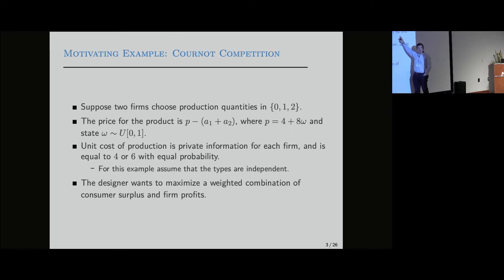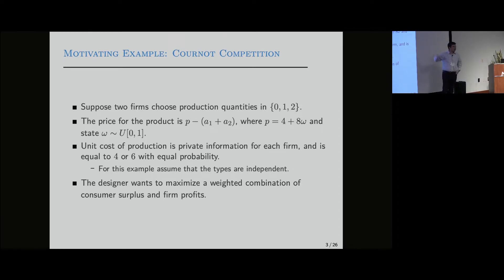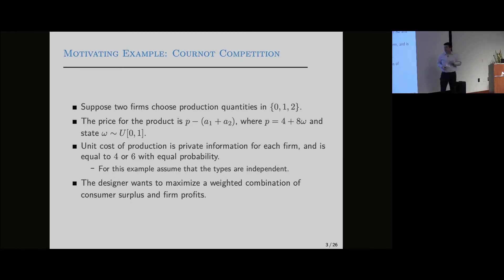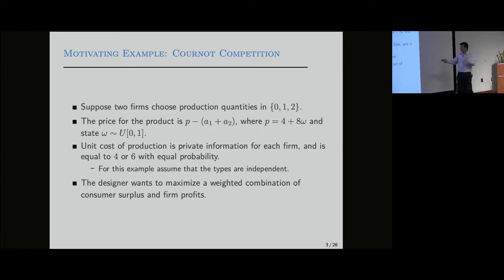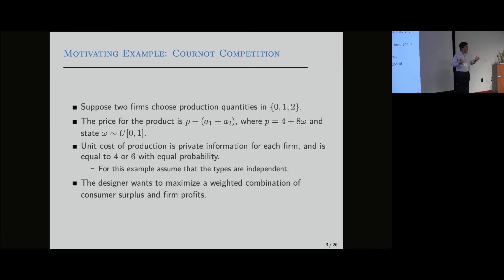Here is where we think about the role of information. I'm going to assume that the intercept is a random variable. Omega is the state of the world, uniformly distributed between zero and one. If omega is high, I'm shifting the price curve upwards — agents have higher willingness to pay. I'm also going to assume that the firms have a cost of production which is private information. For this example, it is independent — four or six with equal probability. The designer wants to maximize a weighted combination of consumer surplus and firm profits.